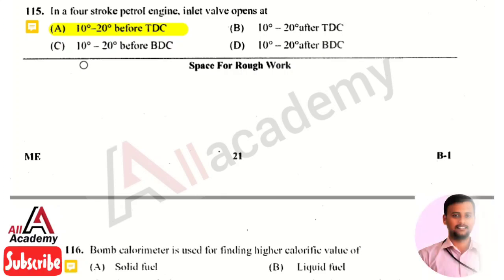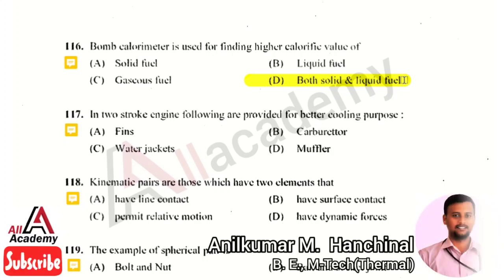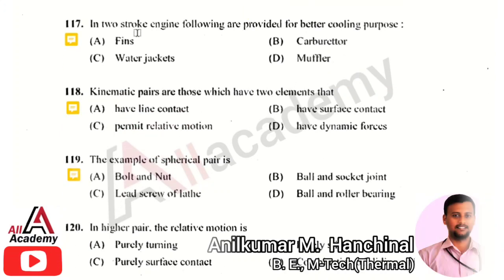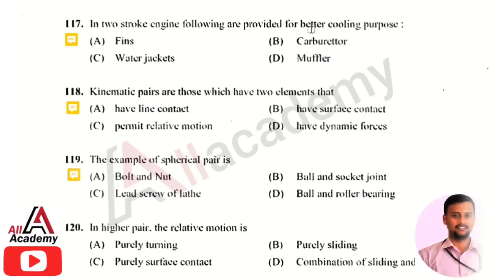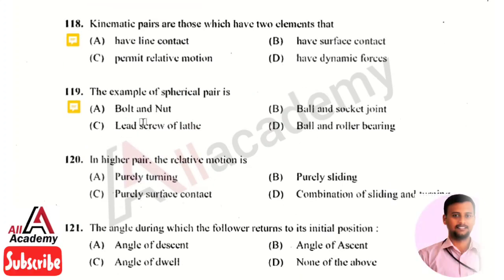Both solid and liquid fuels can be used in a bomb calorimeter to identify calorific value. For a two-stroke engine, fins are provided for better cooling. In heat transfer, fins are surfaces extended from an object to increase the rate of heat transfer from or to the environment by increasing convection.